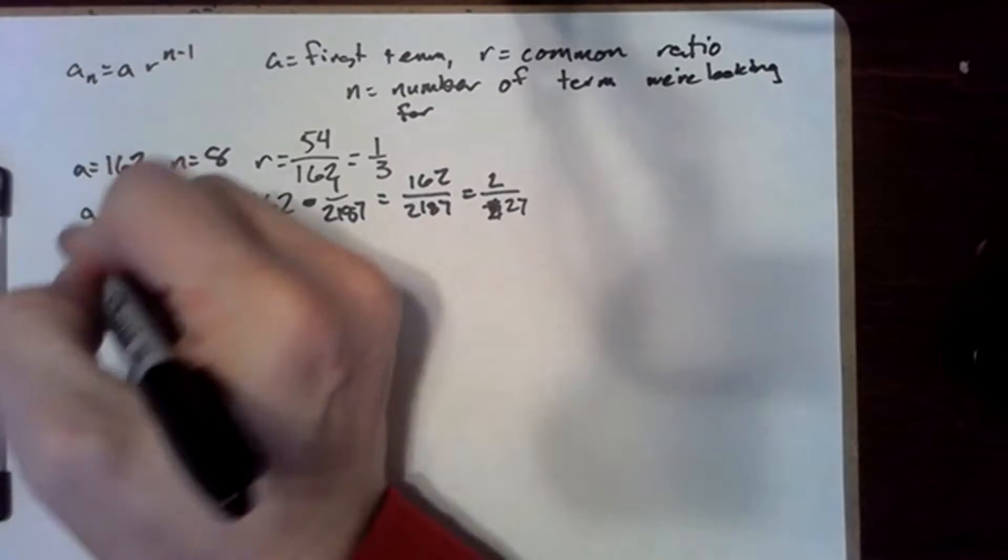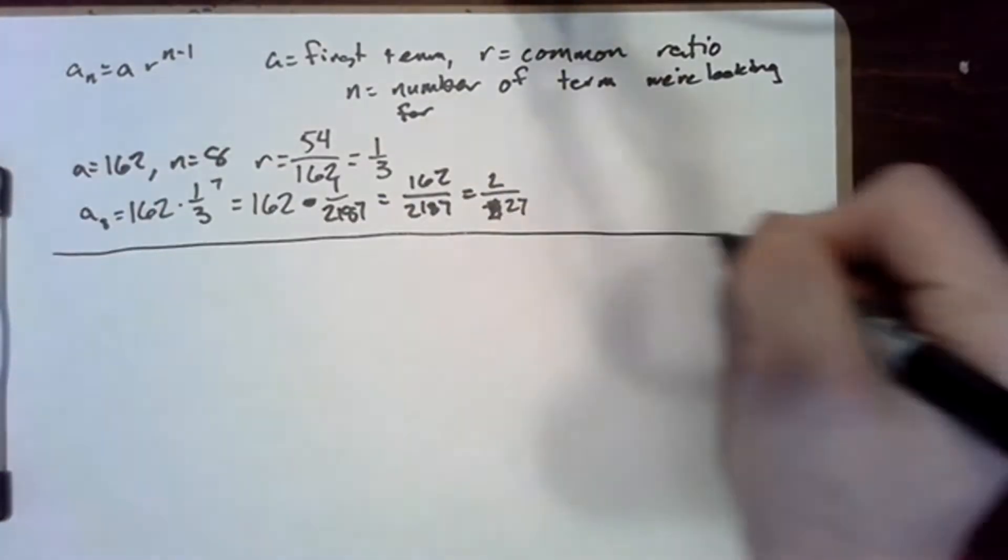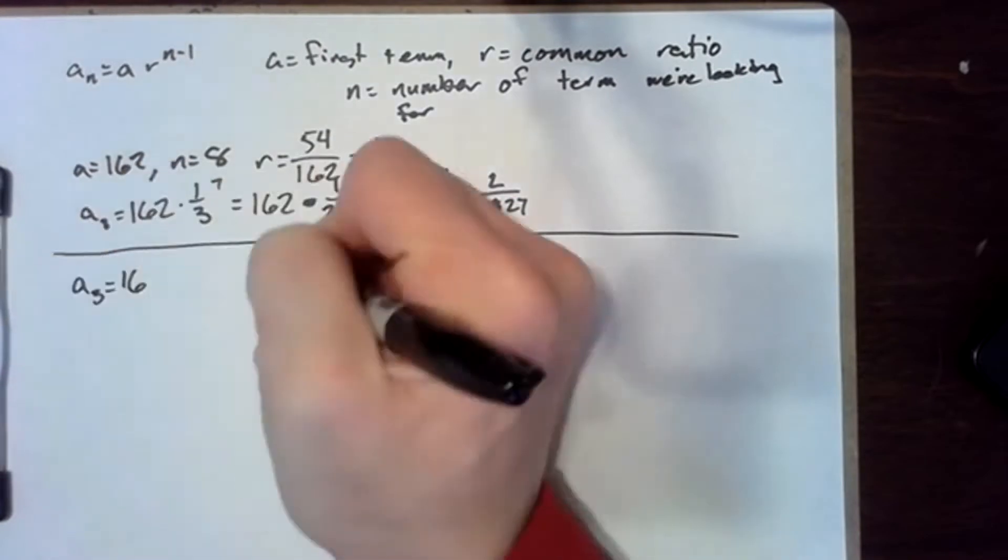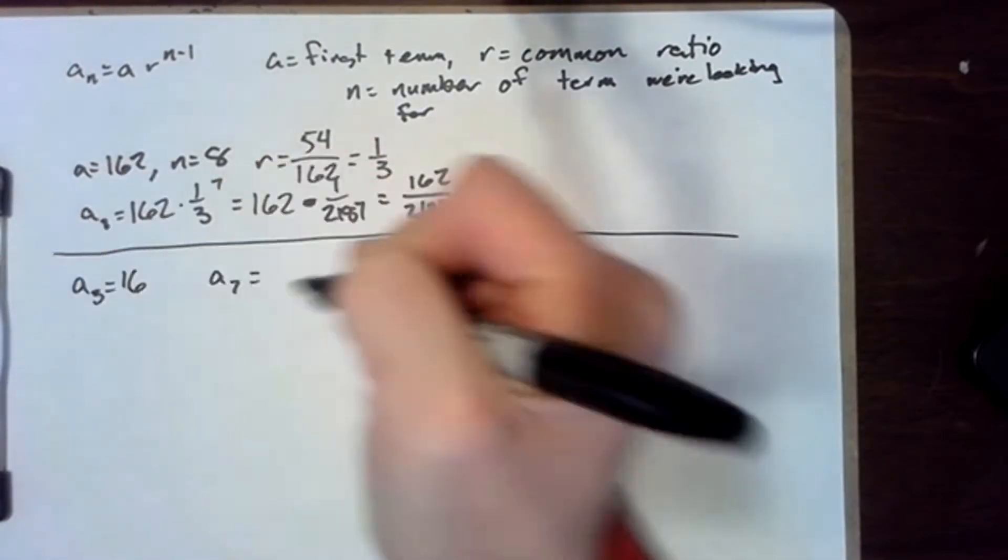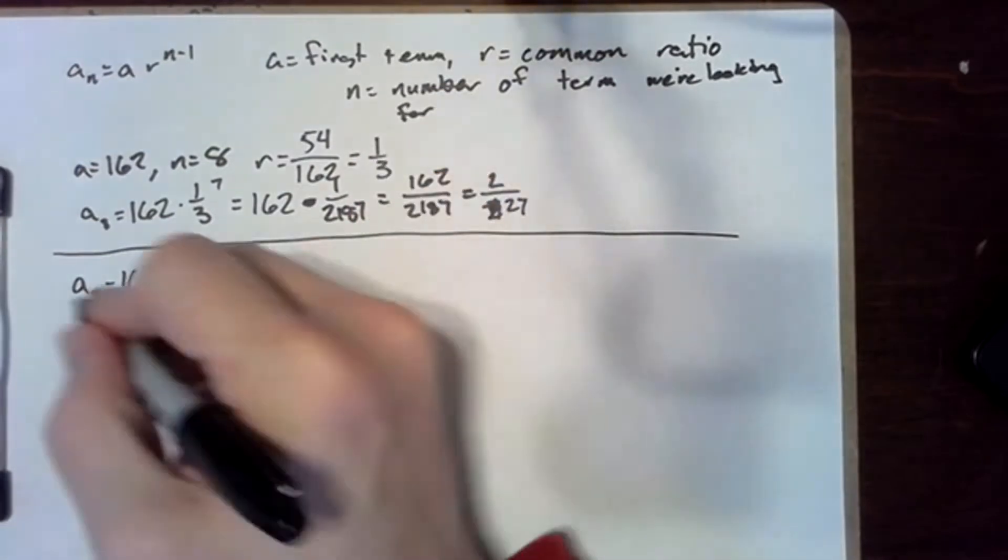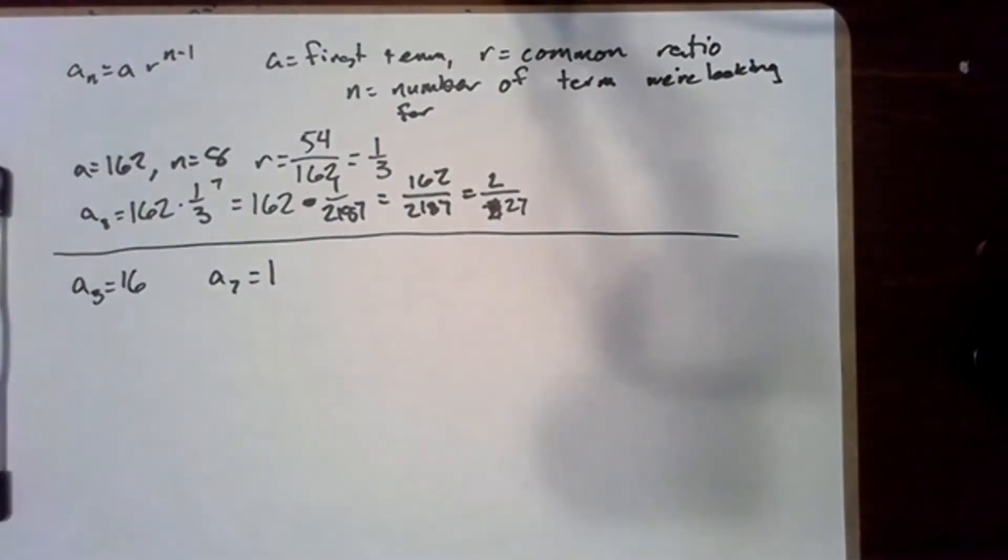So we know that a sub three is 16 and a sub seven is one. That means there are four terms difference here.